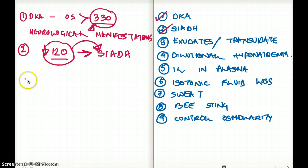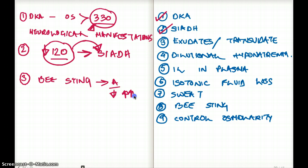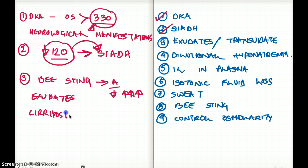Next, we discuss exudate and transudate. An example of exudate would be a bee sting — when the bee stings, there is anaphylaxis, and as a result there is pooling of cytokines, interleukins, white blood cells, and T cells, producing an exudate. For transudate, cirrhosis is an example because the liver is responsible for making protein and albumin. If there is a lack of protein, we are going to have transudate.